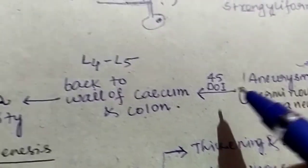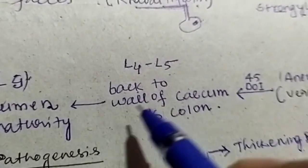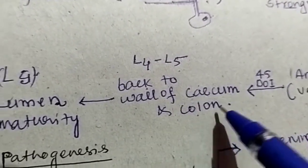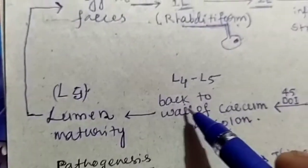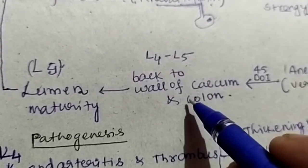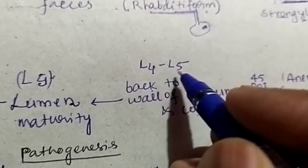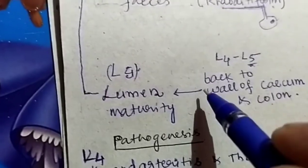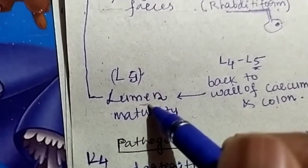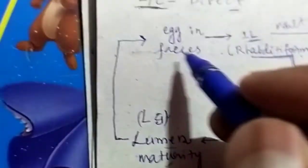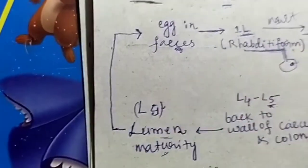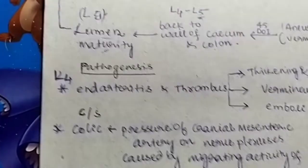After 45 days of infection, it goes back to the wall of cecum and colon. During penetration of the wall, it molts to form L5. L5 is present in the lumen where it matures to lay eggs, and those eggs are voided in the feces of the host.